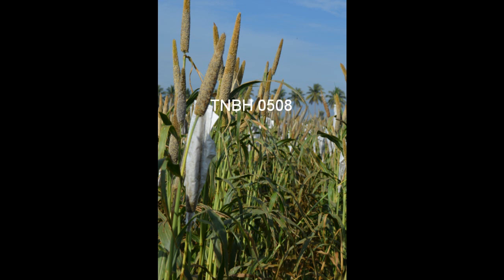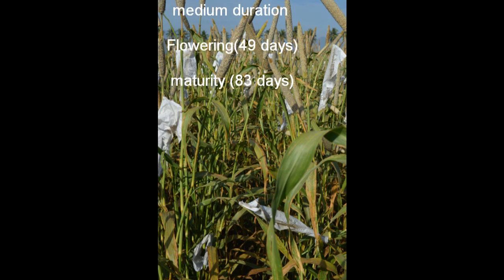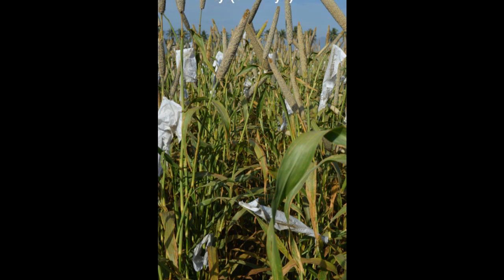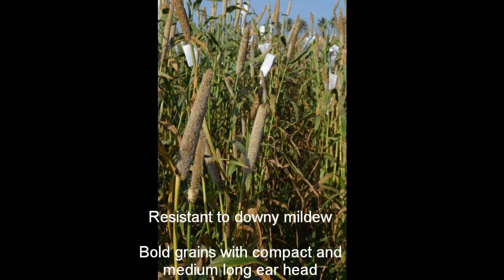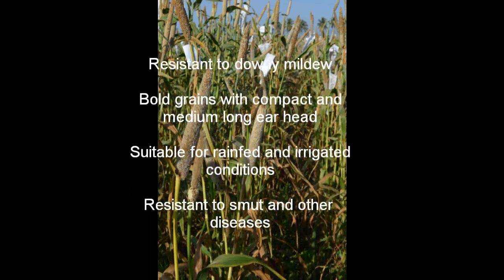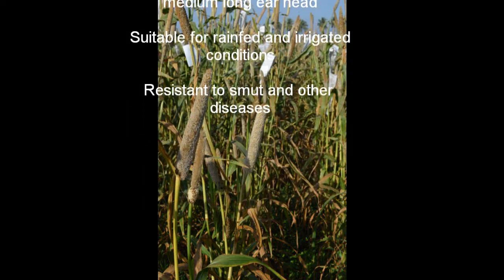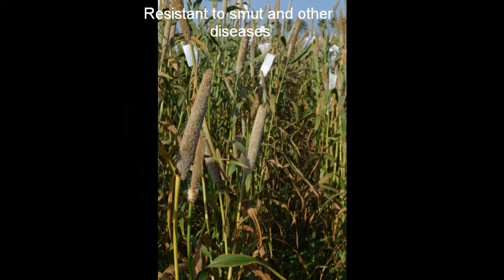The special features of CO9 are that it is resistant to downy mildew and rust. TNBH0508 is a high-yielding, medium-duration hybrid. It has bold grains with a compact and medium-long ear head. It is suitable for both irrigated and rain-fed conditions and is resistant to downy mildew, smut, etc.